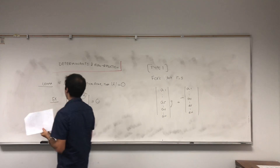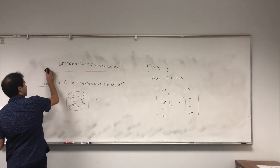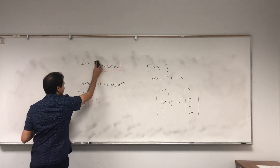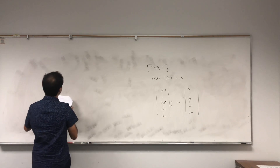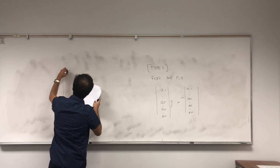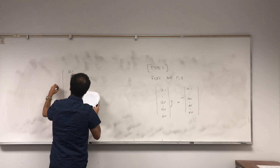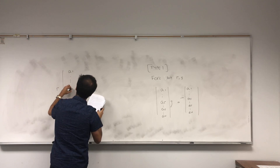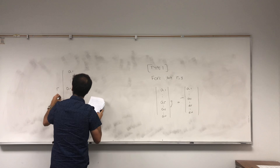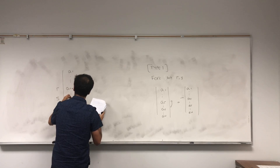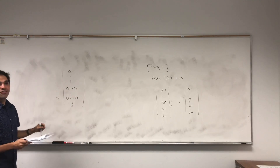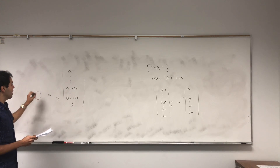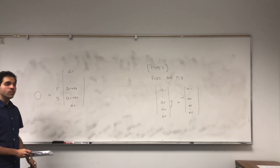The proof is adorable — Oreo should watch this proof! Consider the following matrix: take A1 up to AN, but in the Rth row put AR plus AS, and also in the Sth row put AR plus AS. Notice we have two identical rows, so by our lemma, this determinant is zero.